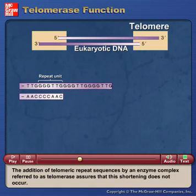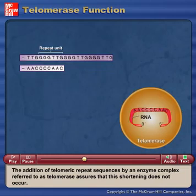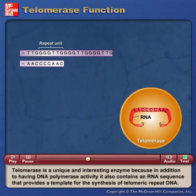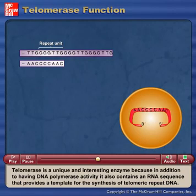The addition of telomeric repeat sequences by an enzyme complex referred to as telomerase assures that this shortening does not occur. Telomerase is a unique and interesting enzyme because, in addition to having DNA polymerase activity, it also contains an RNA sequence that provides a template for the synthesis of telomeric repeat DNA.